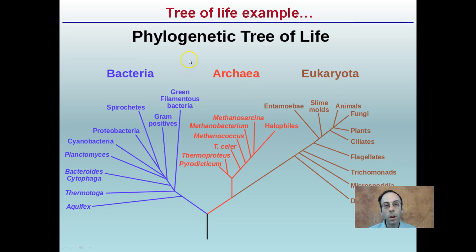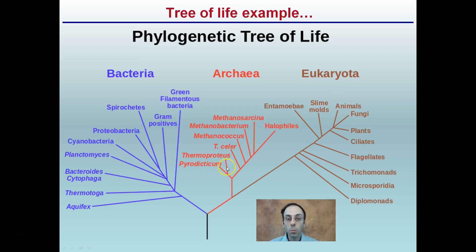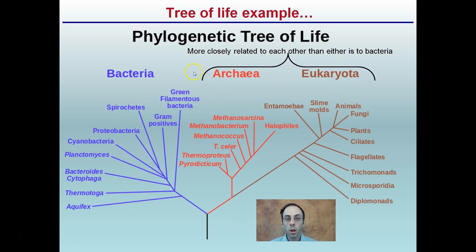Our phylogenetic tree of life — you'll notice our bacteria, our archaea, and our eukaryotes, and what classifies as certain categories right here. We see the branch points, and the closer things are to one another, the more closely they are related. These are more closely related to each other than either is to bacteria. Because if you notice this branch point, both of these stem from the same area. These branch out earlier, indicating these bacteria are more distantly related than these two are to each other.